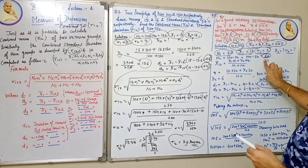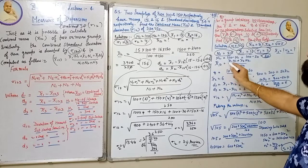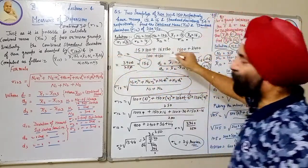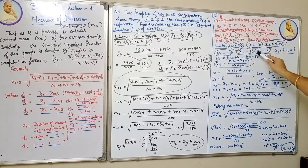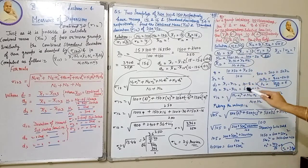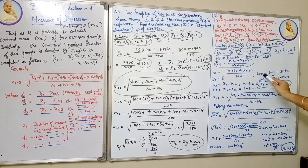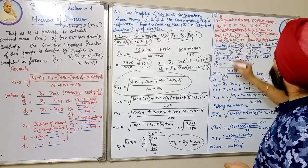Using the combined mean formula: combined mean = (mean1×N1 + mean2×N2) / (N1+N2). Substituting: 8 = (10×50 + mean2×50) / 100, which gives 800 = 500 + 50×mean2, so 50×mean2 = 300, therefore mean of second series = 6.